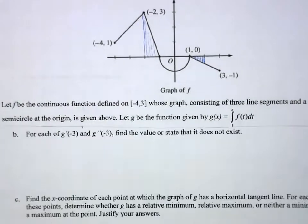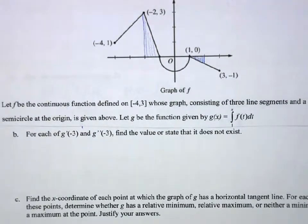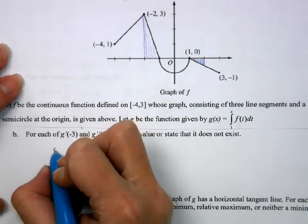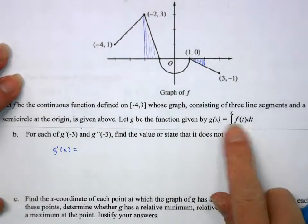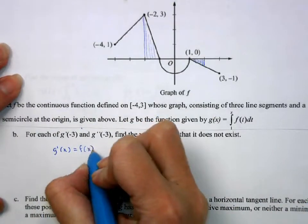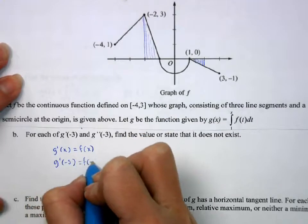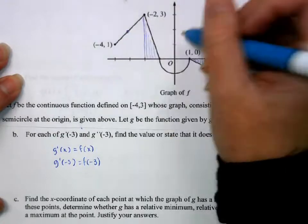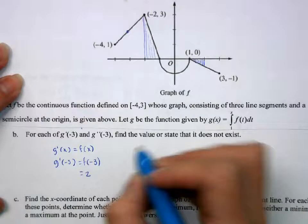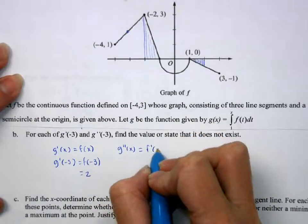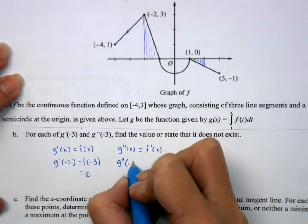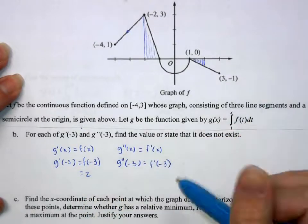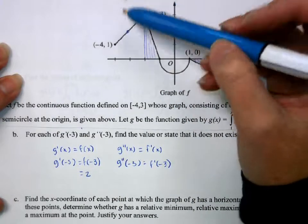Part b: find g prime of negative 3 and g double prime of negative 3, or state they don't exist. Since g prime of x equals f of x, g prime of negative 3 equals f of negative 3 equals 2. g double prime of x equals f prime of x, so g double prime of negative 3 is the slope of f at negative 3. That segment goes up 2 over 2, so the slope is 1.